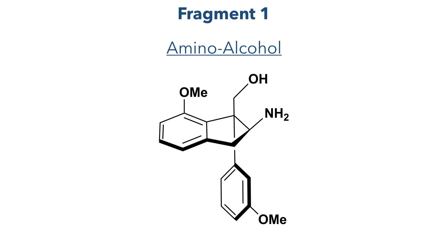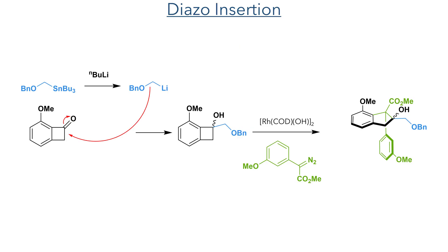With the retrosynthesis covered, let's dive into the synthesis of the first fragment, the amino alcohol. An organolithium nucleophile was generated from the reaction of tributyltin benzyl ether and N-butyllithium. This attacked the benzocyclobutanone to form a tertiary alcohol. This tertiary alcohol then underwent a diazo insertion reaction to install the aromatic ester group, catalyzed by a rhodium cyclooctadiene compound.